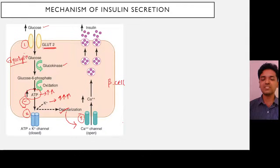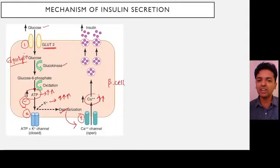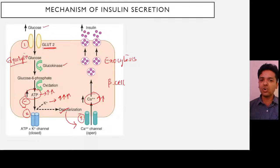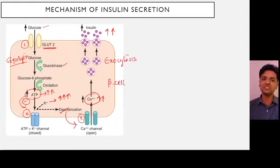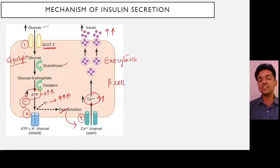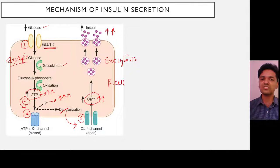Once the cell is depolarized, it causes opening of the voltage-sensitive calcium channels, leading to calcium influx — calcium enters inside the cell. This calcium influx leads to exocytosis of vesicles. What is stored inside the vesicles is insulin, and hence this causes secretion of insulin. So the sequence is: calcium influx → exocytosis → insulin secretion.